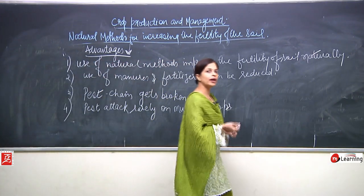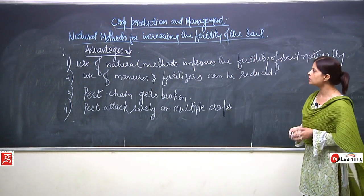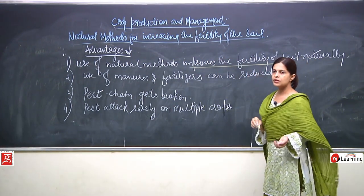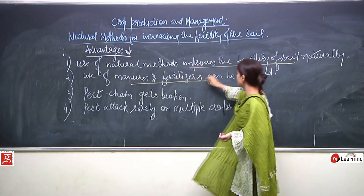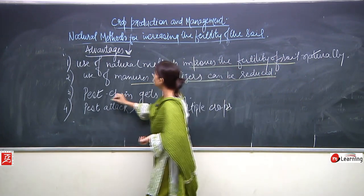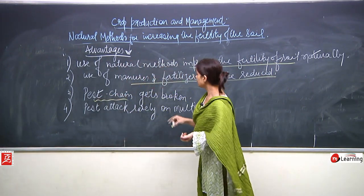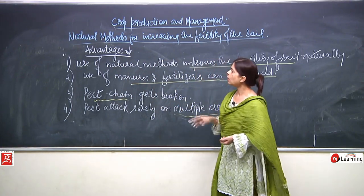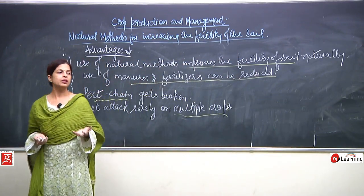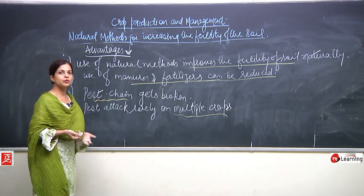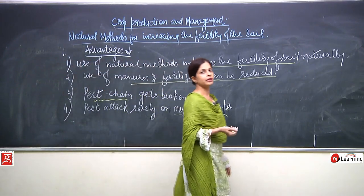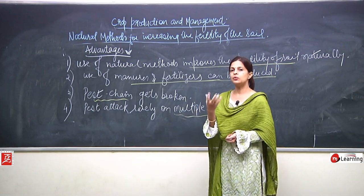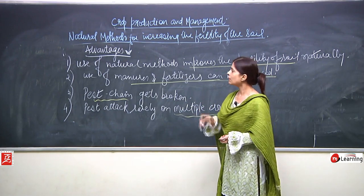These are the advantages of why natural methods should be used: it improves the fertility of the soil, use of manure and fertilizers can be reduced, it breaks the pest chain, and pests attack rarely on multiple crops. The natural means include leaving the field fallow and using crop rotation.